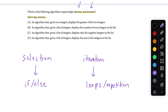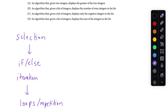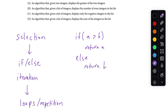Let's see which two of these four answers have both selection and iteration. The first answer says: an algorithm that, given two integers, displays the greater of the two. I'm imagining code like: if a is greater than b, return a, else return b. So we would have selection here, but we don't actually have any iteration — we're not looping or repeating over anything. So A is not one of the two answers we're looking for.